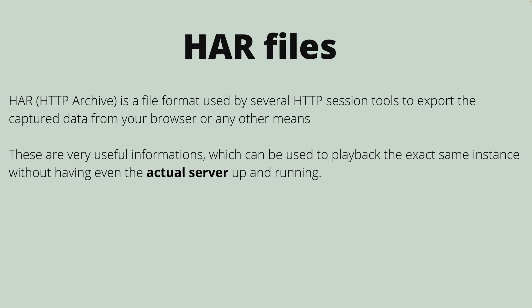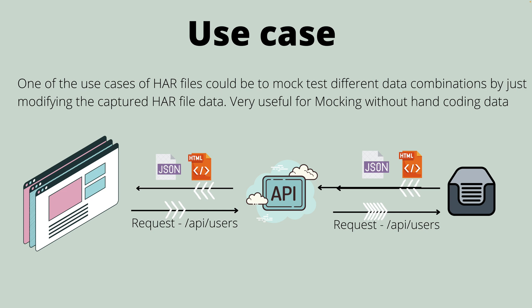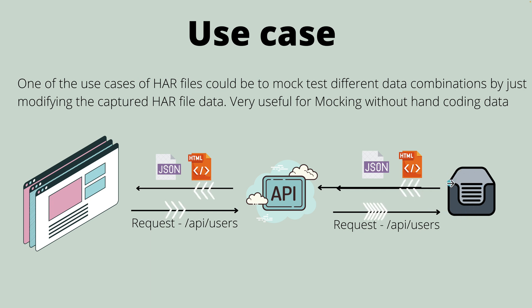There are many use cases for the HAR file. One use case is that we can use the HAR file to mock different test data combinations by just modifying the captured HAR file data. These are very useful for mocking data without actually hand-coding it. The application we are going to be testing generates a lot of API requests and responses including HTML, JSON, images, and more. We can capture all this information, save it as a HAR file, modify the data, replay it, and verify different test scenarios.